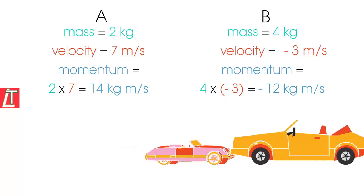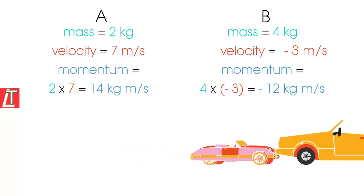Note, because car B is moving in the opposite direction to car A, its velocity is negative.